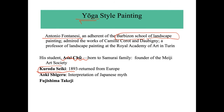The next important person is Kuroda Seiki. Both Asai Chu and Kuroda Seiki came from respectable samurai families. Kuroda — his family name — went to Paris and stayed a few years, where he learned plein air style painting, or outdoor landscape painting, from French painters. Kuroda Seiki is very important among those who went to Paris to study.